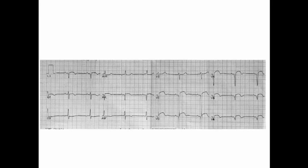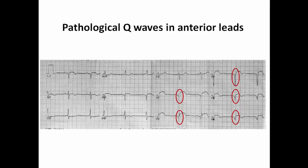In this ECG example, we can see pathological Q-waves in V2 to V3 plus residual ST elevation. This appearance is suggestive of pathological Q-waves in anterior leads, most probably caused by anterior STEMI. According to the clinical presentation, we can decide whether it is acute STEMI with ongoing infarction or an old infarction.